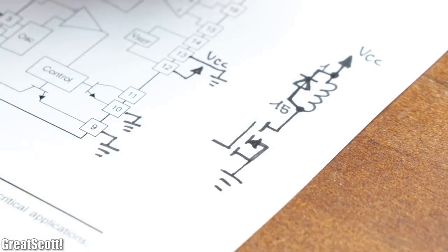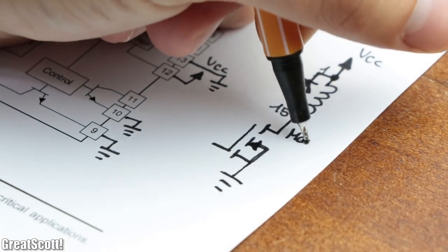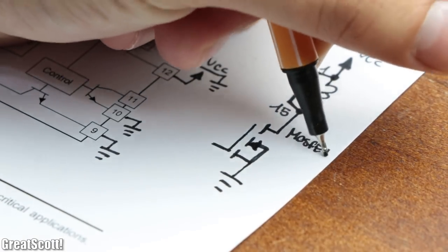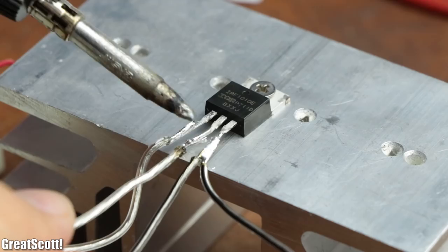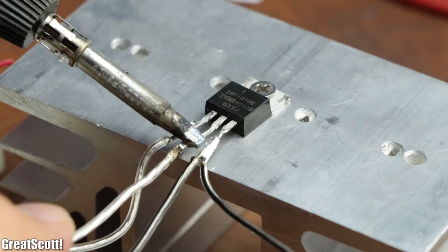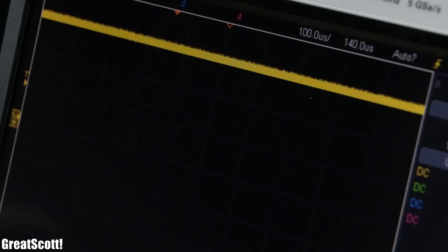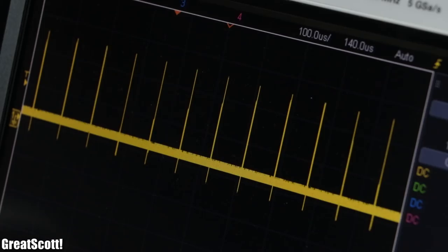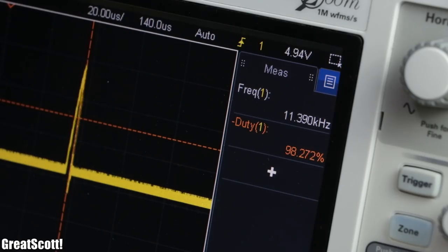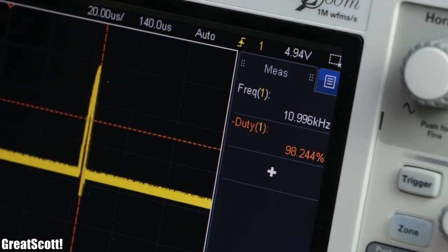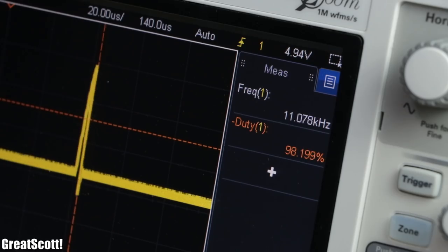Additionally, since I later want to turn on/off the ignition coil with a MOSFET, I added a rather crude control circuit for it to the TL494 IC. And by measuring the signal on its gates, we can see our created PWM signal with a frequency of roughly 11 kilohertz and an inverted duty cycle of 98%.